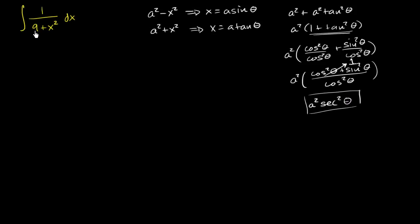We could rewrite 9 plus x squared as 3 squared plus x squared. In this case, a would be equal to 3.